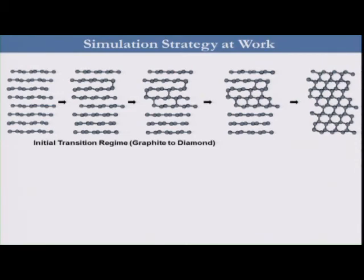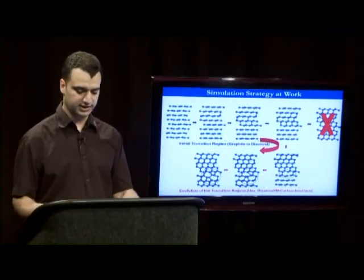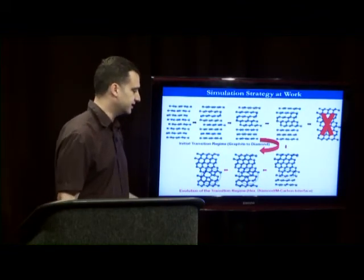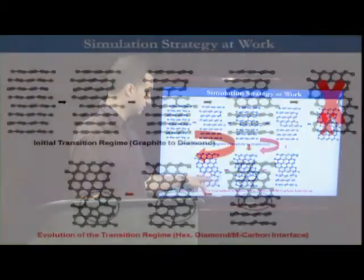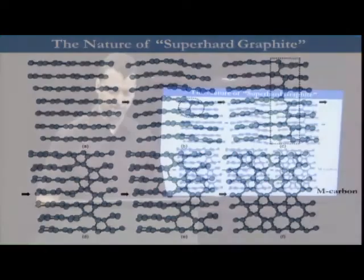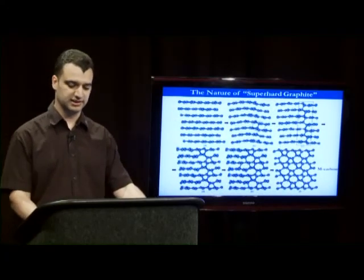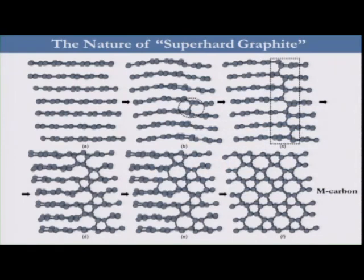On further sampling of this pathway, we observed that the transition regime shifts from the initial endpoint, which was diamond. We now observe the formation of new structural patterns made of five-membered rings and seven-membered rings. On further sampling and optimizing this transition, we can see that the endpoint shifts completely to a different structure, and by looking at it and identifying it, we can see that it is M-Carbon.